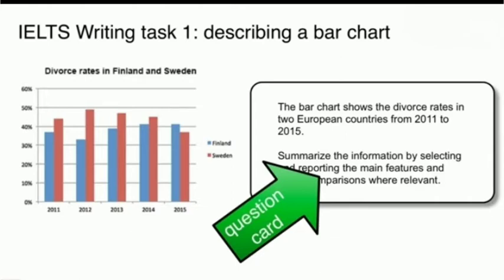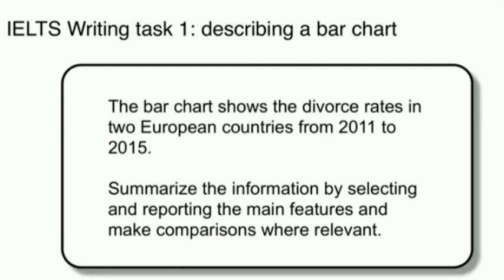It is clearly written in the statement — in every graph it is written that you have to do comparison. I always tell students that if you use comparison vocabulary, your bands will improve and the impression of Task 1 will be good. We have two countries given: Finland and Sweden. It is very important to read the Task 1 statement carefully, because the entire Task 1 is attempted on the basis of the statement. Task 1 is defined in 99.9% of cases using previous years.